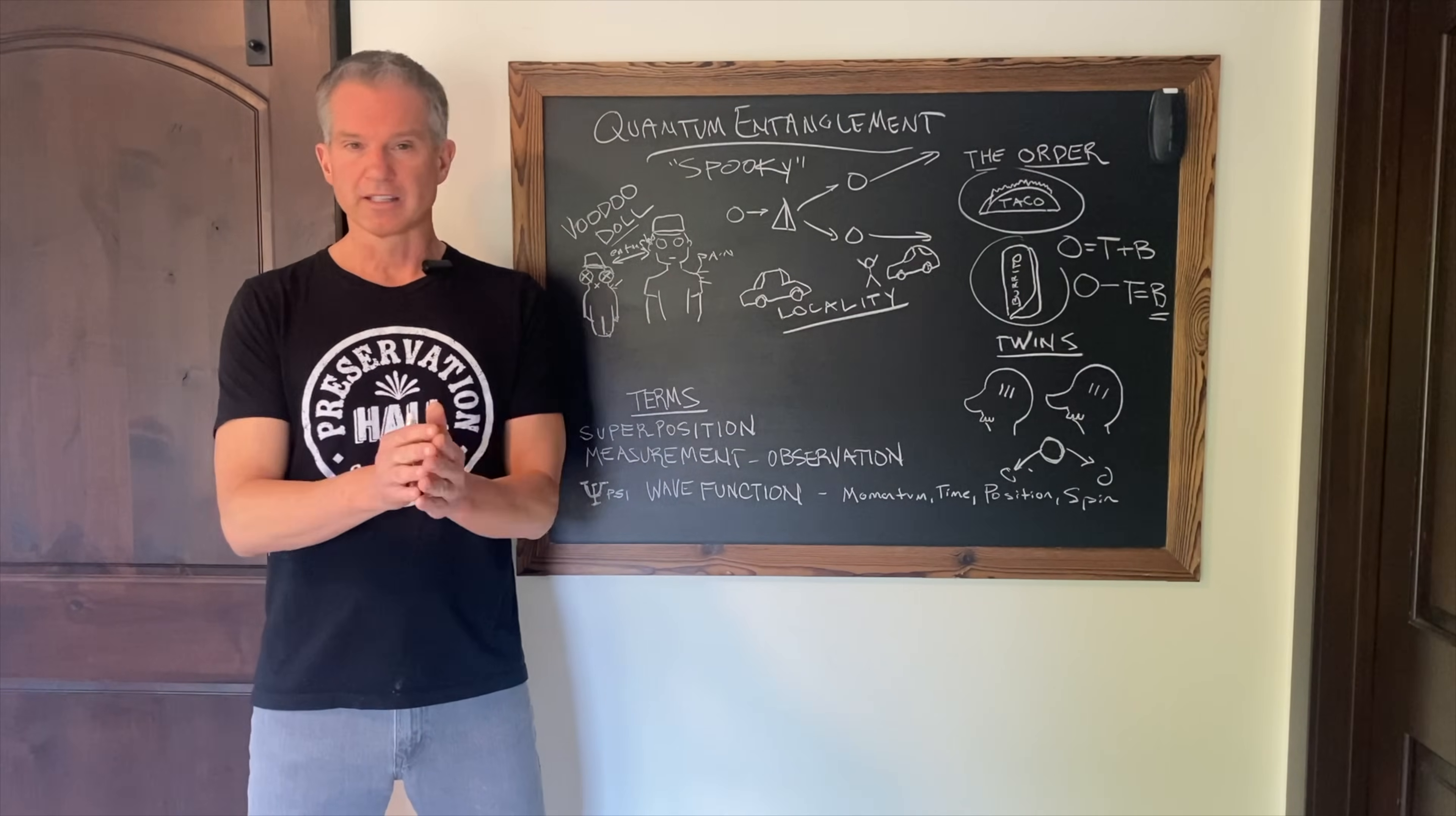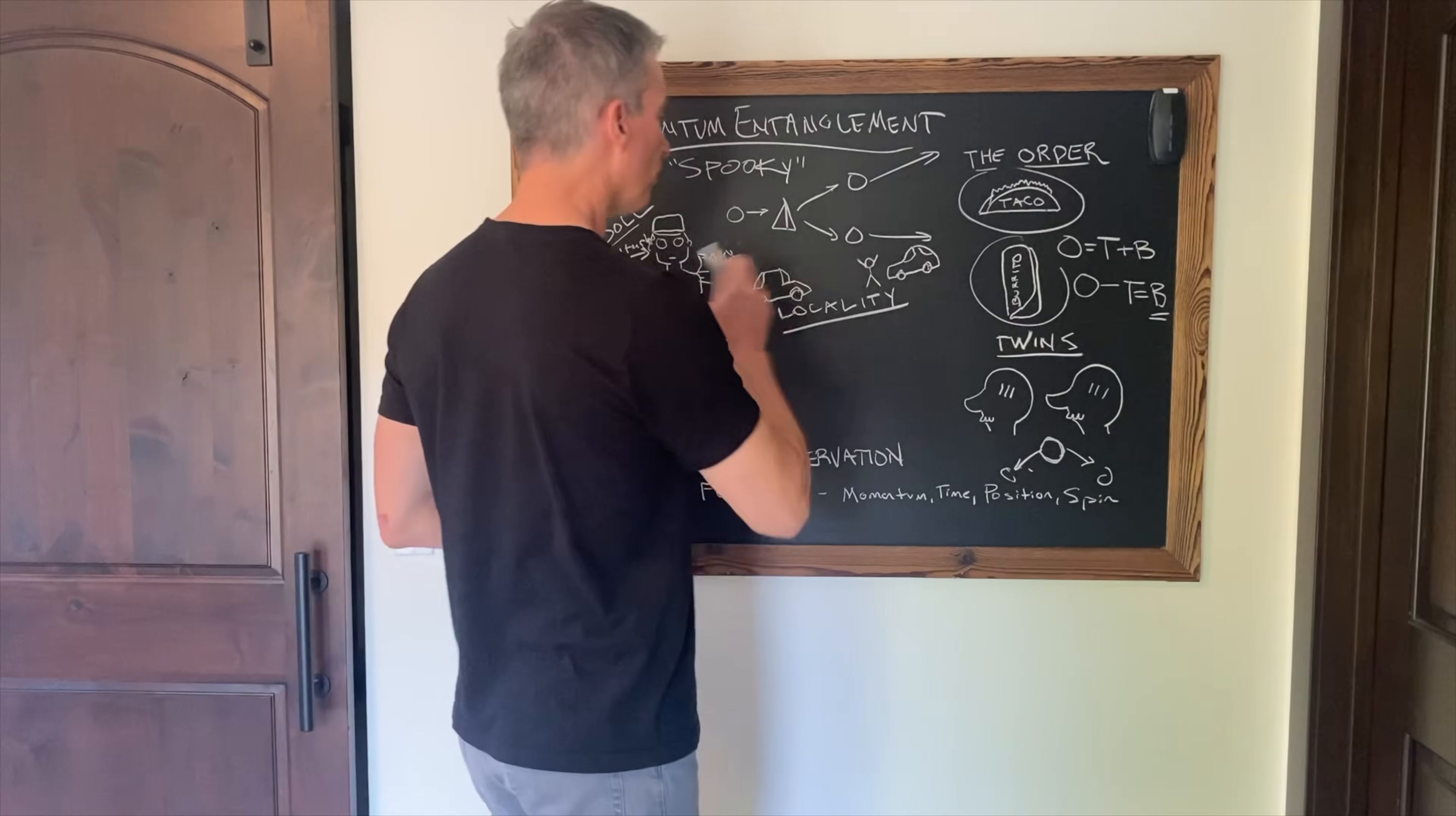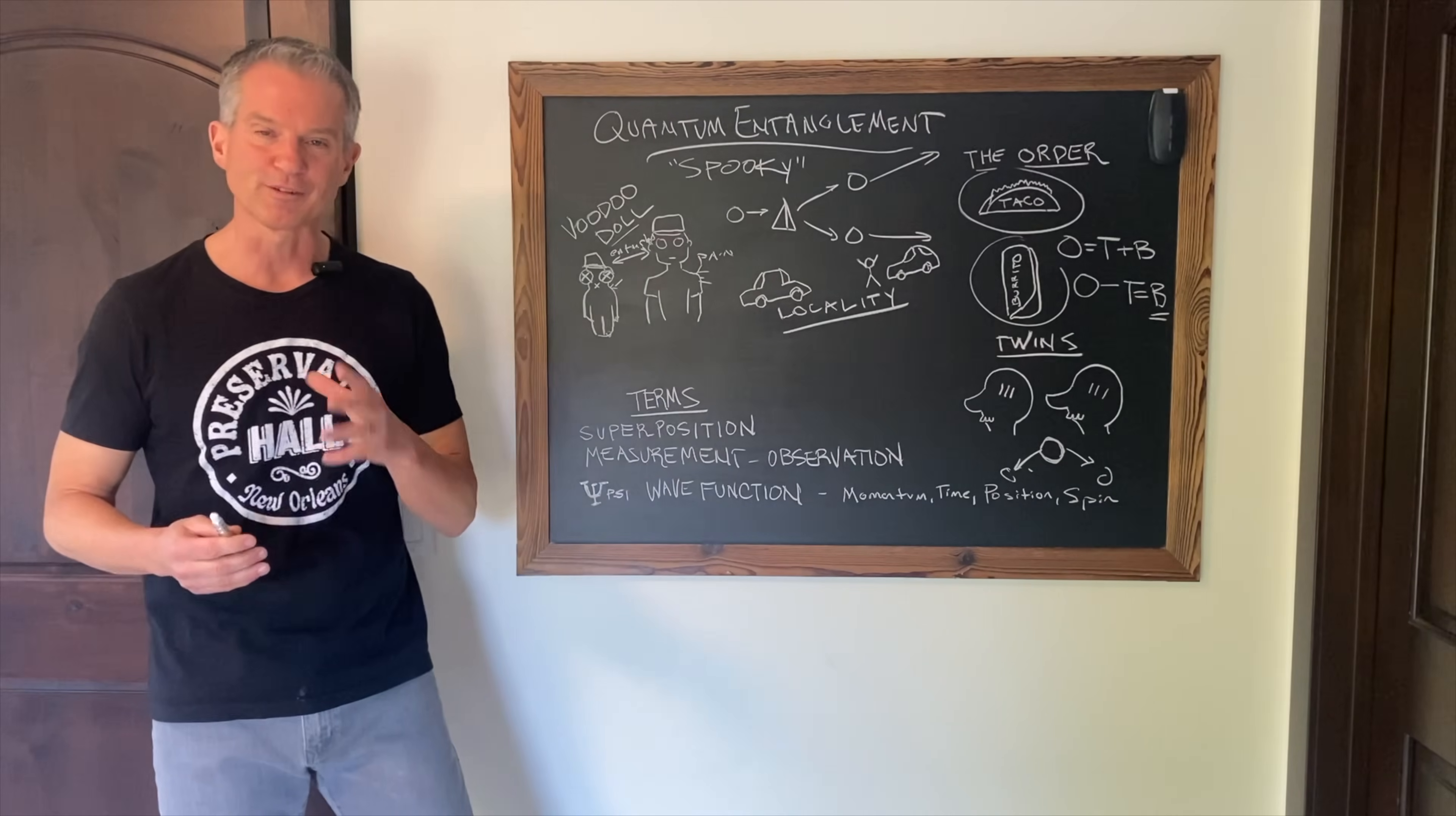Particles become entangled. It doesn't matter the distance between them. Even time can separate them, and they remain entangled. This is why Einstein thought it was so spooky. It violates the principle of locality. Locality is one of the hallmarks of classical physics.